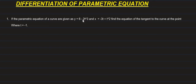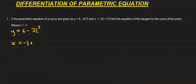I am going to say Y equals to 6 minus 2t cube. And where X equals to 3t plus t squared. This is the parameter equation. And the first order derivative is dy over dx.